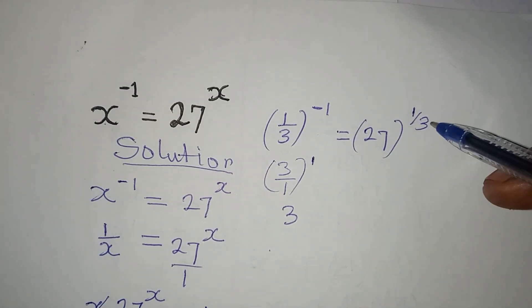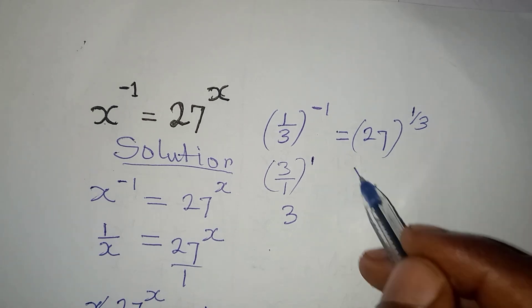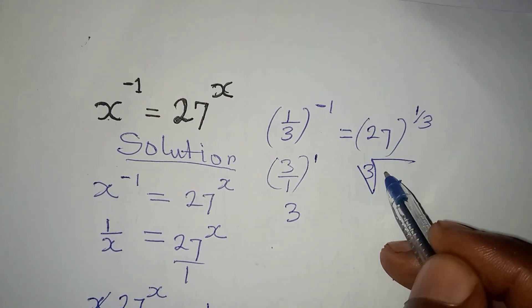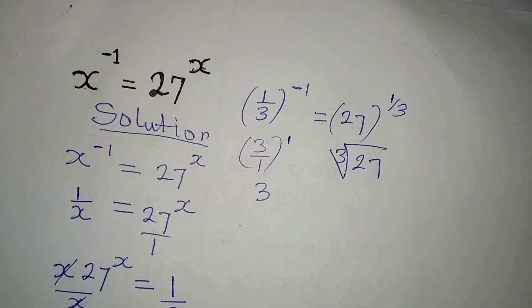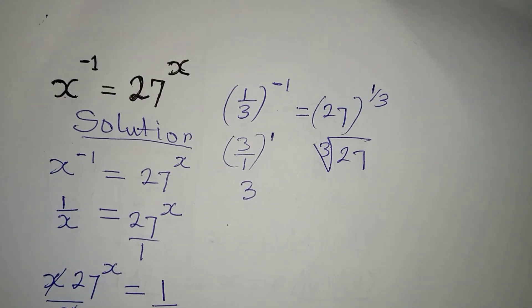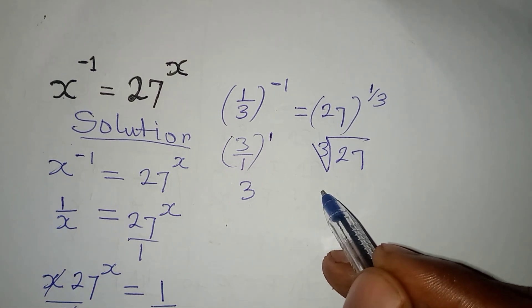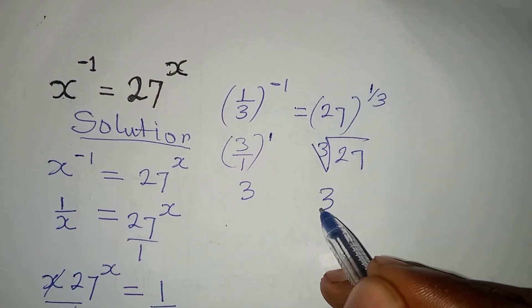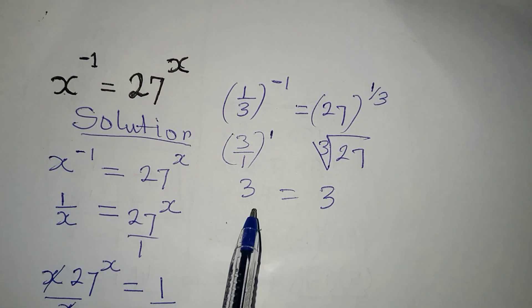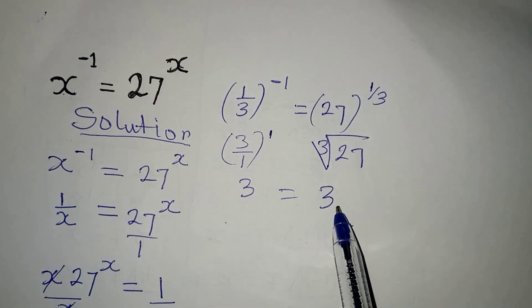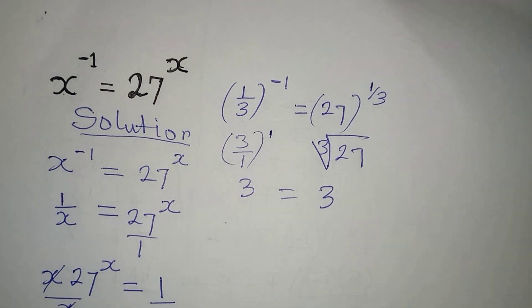Now let's try the right-hand side: 27 to the power of 1 over 3 is the same thing as the cube root of 27. The cube root of 27 is 3. So we can see that the left-hand side and the right-hand side are equal, so we are correct. Thank you for watching.